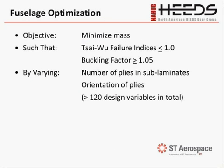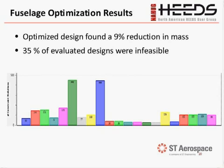The final optimization was on the fuselage — again minimizing mass with the same constraints, varying number of plies and orientation with material choice fixed as fabric. In total, we had greater than 120 design variables for the fuselage, which also had 20 different load cases. We found a 9% reduction in mass. To illustrate the complexity: 35% of evaluated designs were infeasible. The constraint violations plot — available in the new HEEDS post-processing — shows for each constraint the number of evaluations that violated it, indicating which constraints were driving the search.